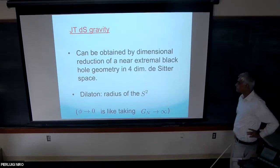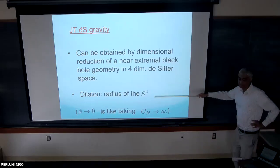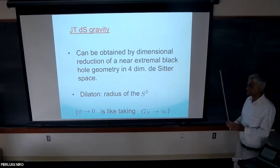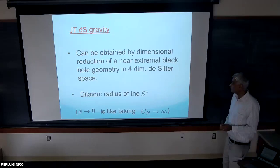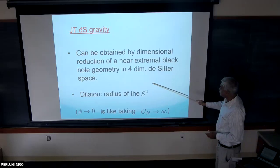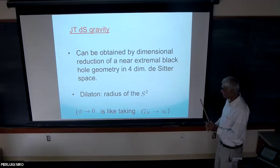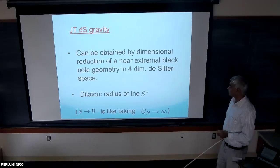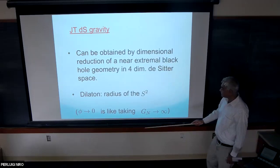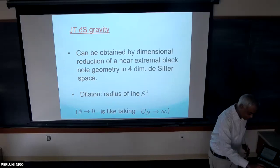This two-dimensional theory can be obtained by dimensional reduction of a near-extremal black hole geometry in four-dimensional de Sitter space. This is akin to how JT gravity in AdS can arise from the near-horizon limit of a near-extremal black hole in AdS or even flat space. There's an extremal black hole in de Sitter space called the Nariai solution, where the cosmological and black hole horizons come very close together. Taking a suitable limit of that gives JT gravity in de Sitter space, and the dilaton is the radius of the two-sphere in that case.